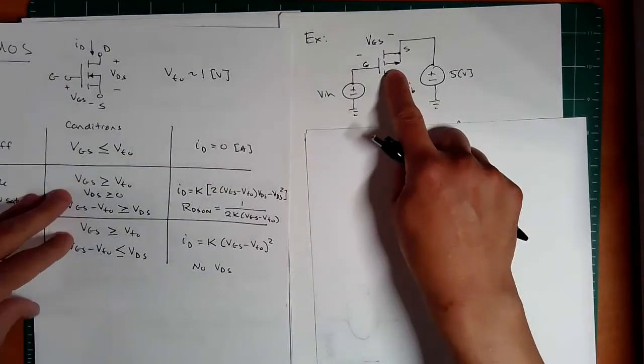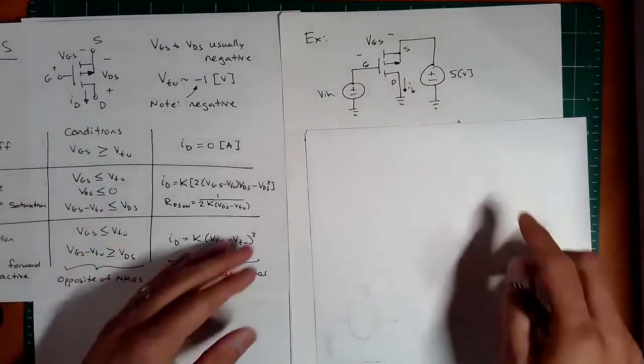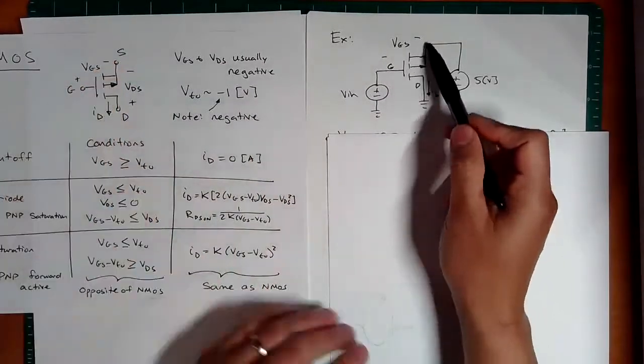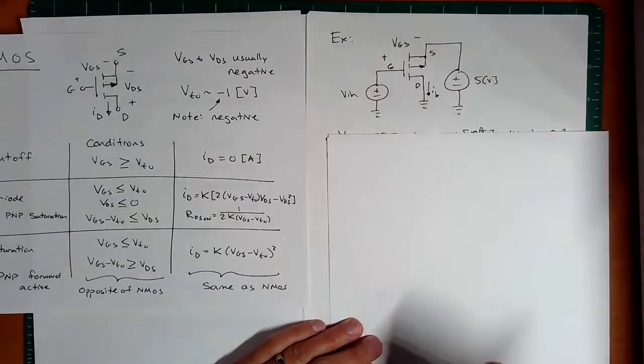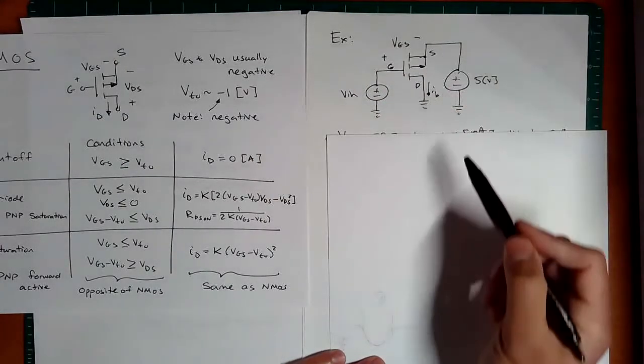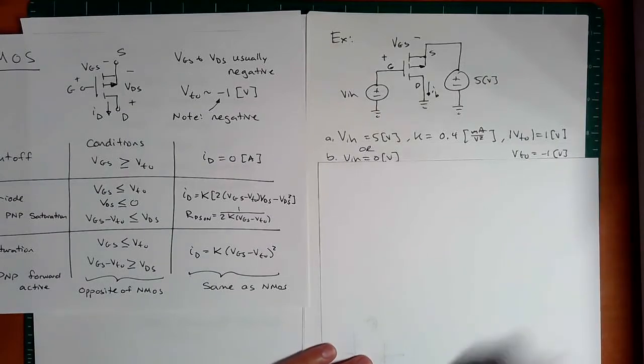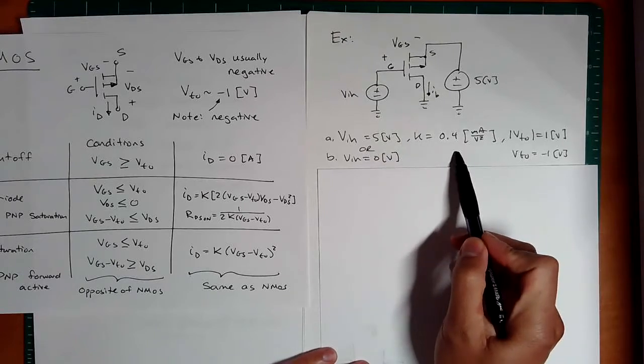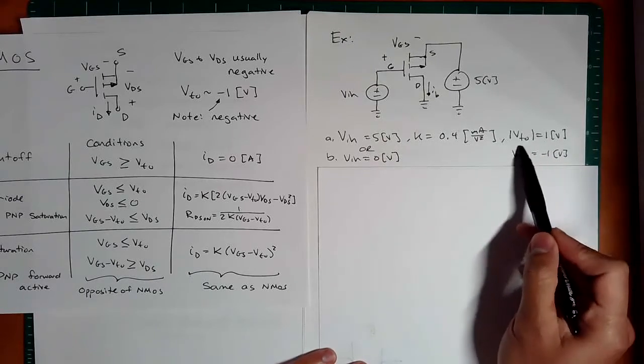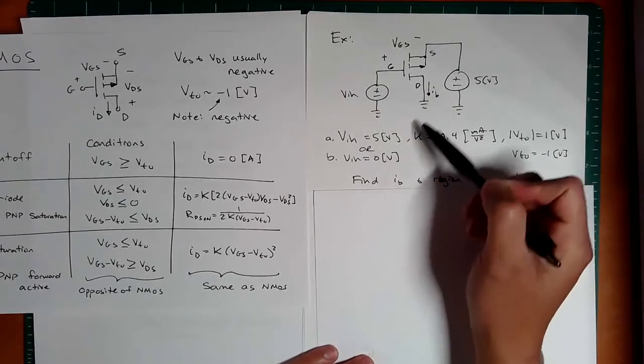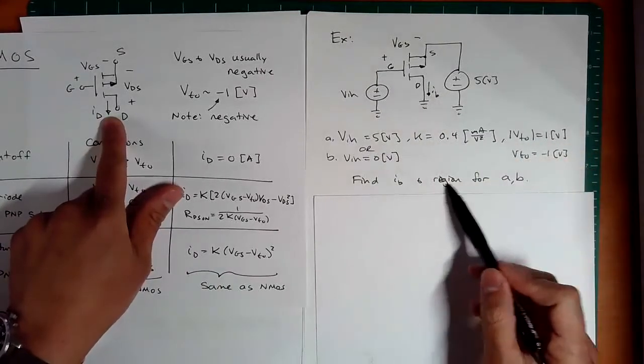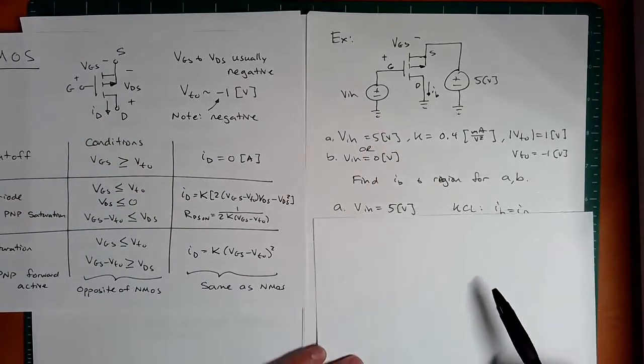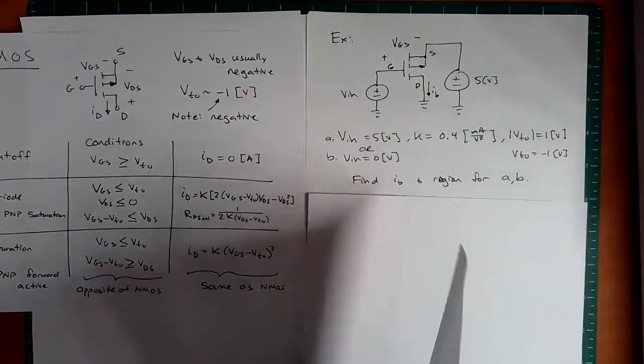Ah, so the next one looks like it is a PMOS. So we can go to this chart. So the PMOS, what do we have? We have V in here. Notice we have the correct orientation gate source drain. This is VGS here. So I'm going to put VGS is plus minus. This is VDS from here to here. And what do we have? The question says, well, what if VN is five or zero? K is 0.4 milliamps per volt squared. And the threshold voltage is negative one volt. Now, what is the mode to find IB? And we know IB is the same as ID. And so for which, for either one of these, what is ID?